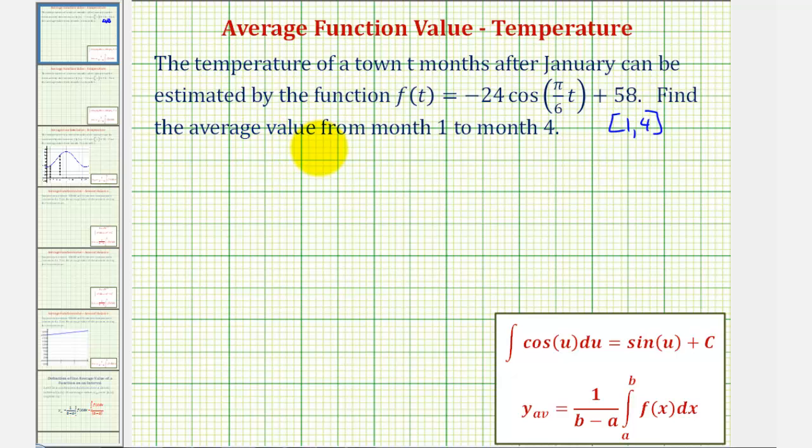The average value or average temperature from month one to month four would be y sub av equals one divided by four minus one times the integral of f(t) from one to four.